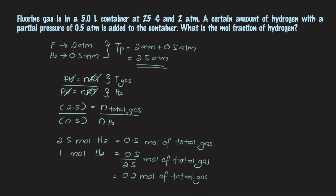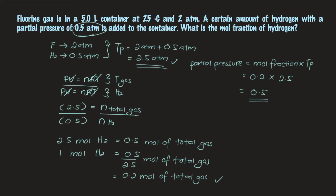The mole fraction of hydrogen is 0.2. To verify: partial pressure = mole fraction × total pressure = 0.2 × 2.5 = 0.5 atm, which matches the value given in the question. This confirms that the mole fraction of hydrogen is indeed 0.2.